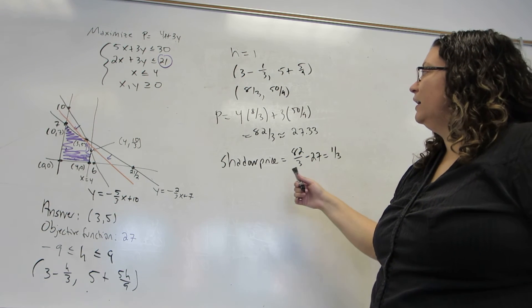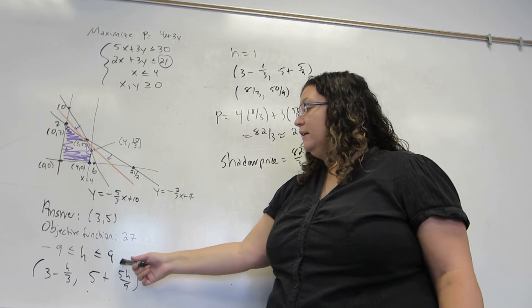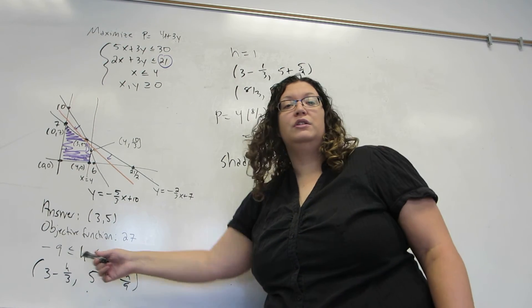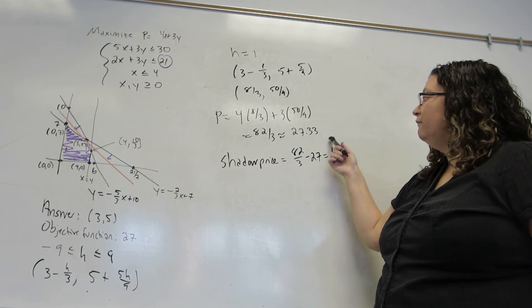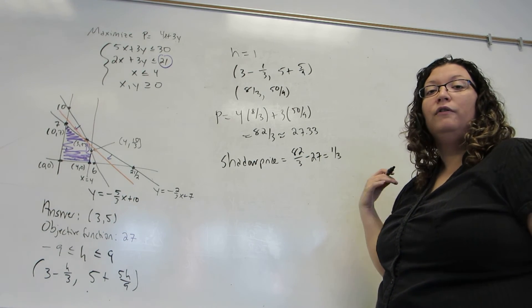If I increase it by 10, or excuse me, 10 is not allowed. If I increase it by 5, which is in the allowed range for H, my profit will go up by 5 times a third, or 5 thirds.